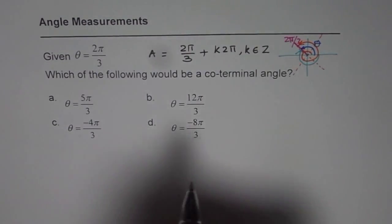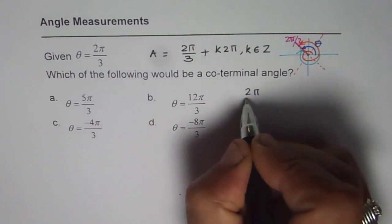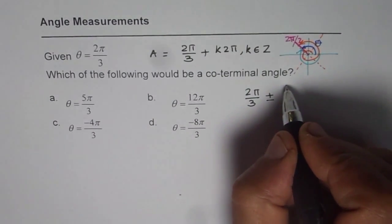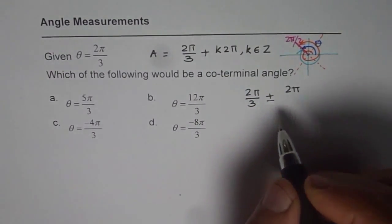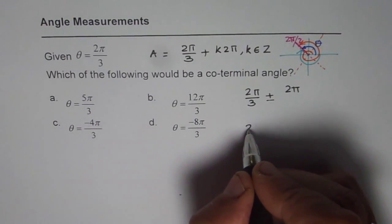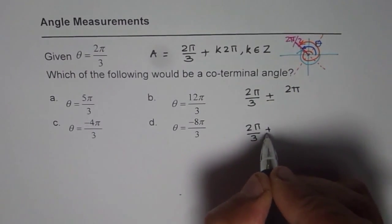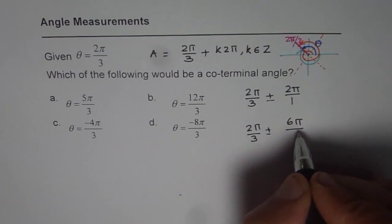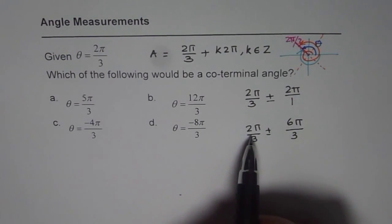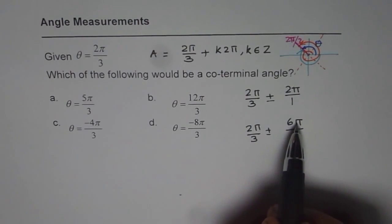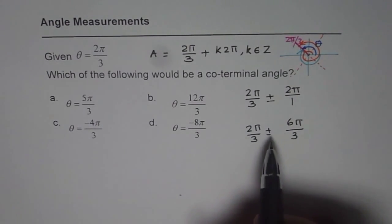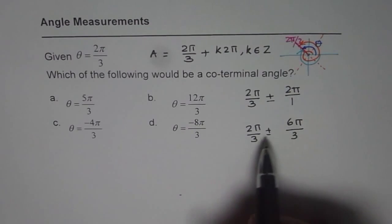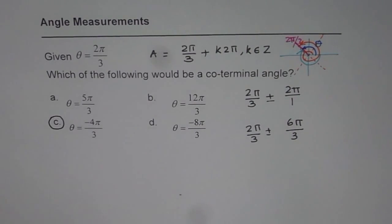Now let's figure out the right answer. We have 2π/3, and we need to add or subtract multiples of 2π. Since the denominator is 3, we write 2π with a common denominator of 3 as 6π/3. Adding: 2π/3 + 6π/3 = 8π/3 — we don't have that answer. Using the minus sign: 2π/3 − 6π/3 = −4π/3. So minus 4π/3 is the right answer.